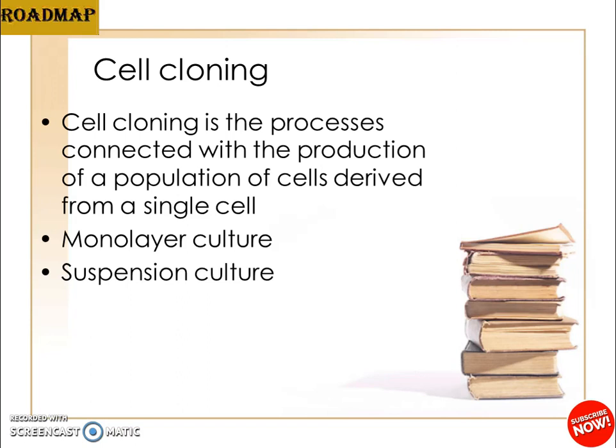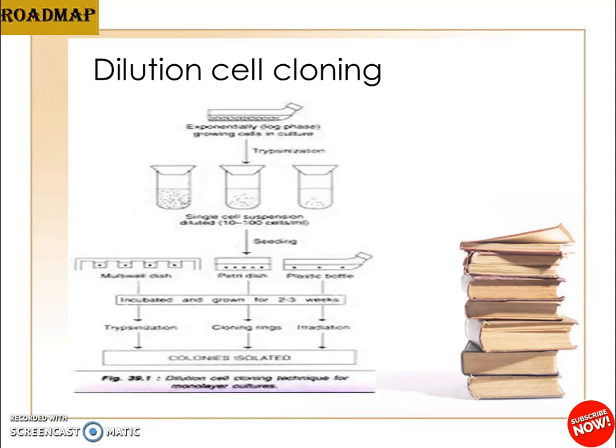So cell cloning is the process connected with the production of a population of cells derived from a single cell. The two approaches are monolayer culture, using petri dishes or multi-well plates, and suspension culture, where cells are seeded into viscous solutions or gels like agar and form colonies in suspension. Now coming to the next topic — dilution cell cloning, which is the most commonly used technique for cloning of monolayer cells.